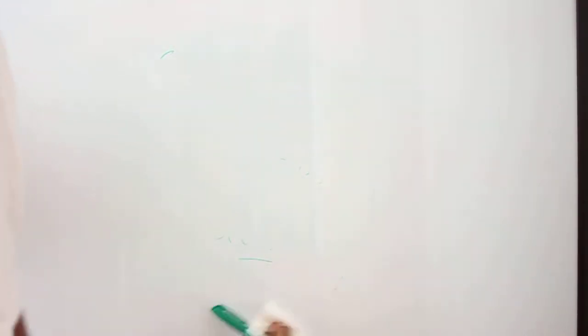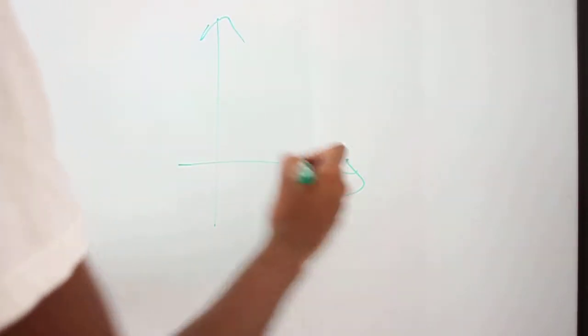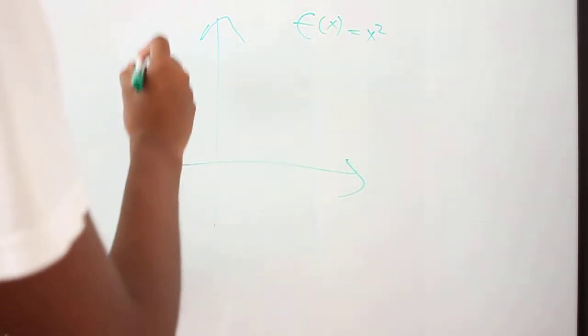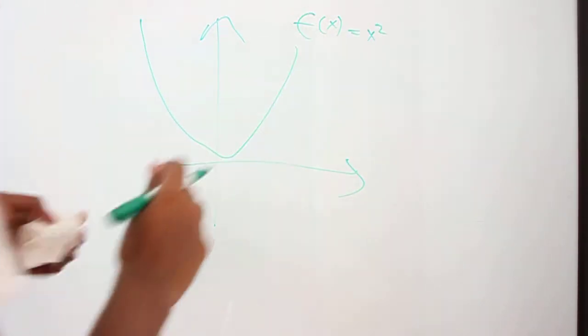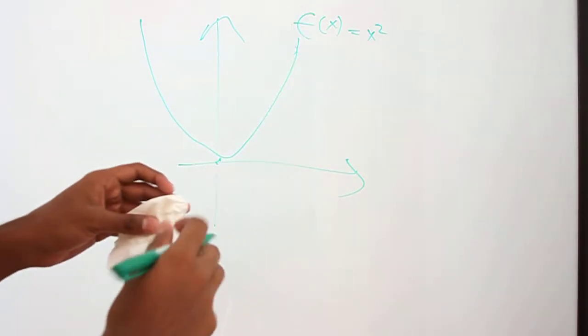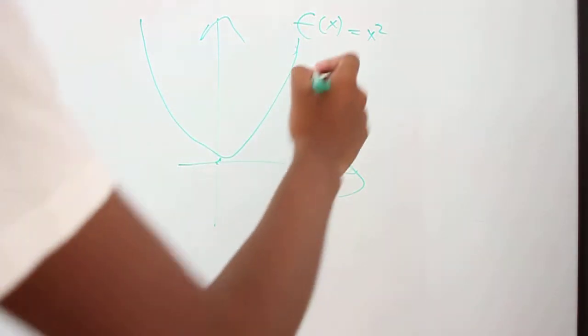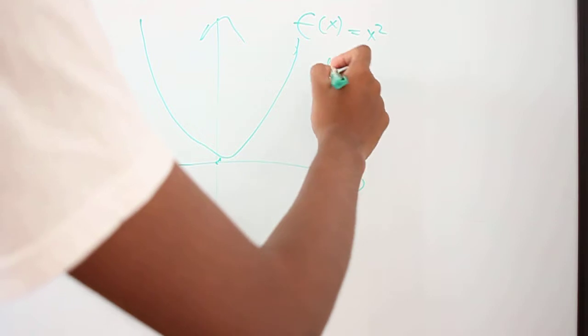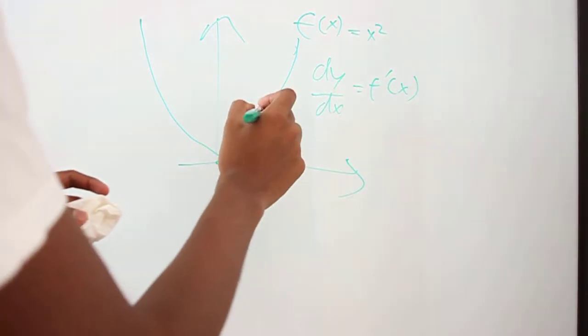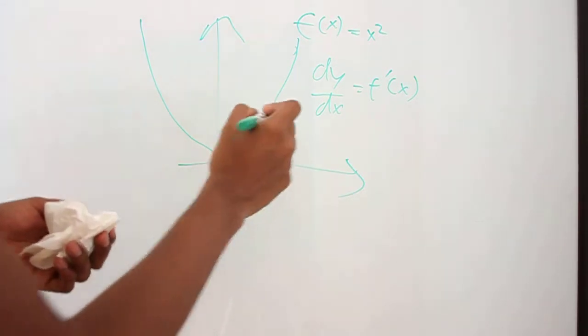So the definition of a derivative is basically, let's take a function, let's say we have f(x) equals x squared, and we have a function like this. So what you really want to find when you find dy/dx, or if you want to call it f'(x), is actually the rate of change. So that's what we mean by derivative.